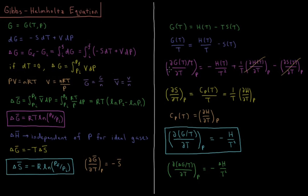So the result is that the partial derivative of G over T with respect to temperature at constant pressure equals the negative enthalpy divided by the temperature squared. This is the Gibbs-Helmholtz equation, and it will become important because we'll use it to derive the Van't Hoff equation, which gives us the temperature dependence of equilibrium constants of chemical reactions.